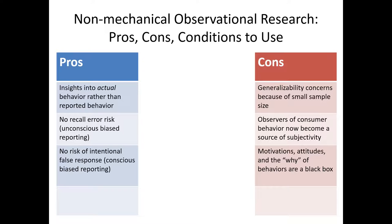There are definitely some challenges associated with observational research. For non-mechanical observational research using humans to directly collect data, it tends to be quite expensive, and there are often generalizability concerns because of small sample sizes. In addition, the observer themselves becomes a source of subjectivity — the marketing researcher may have to make judgment calls about whether a person was actually handling a product in a retail store. Finally, by observing people's behaviors, we can only make inferences about their underlying motivations, attitudes, and beliefs. We don't really know why people are doing what they're doing — only communication-based research techniques can get directly at those things.